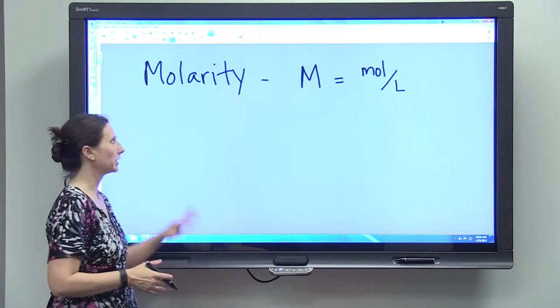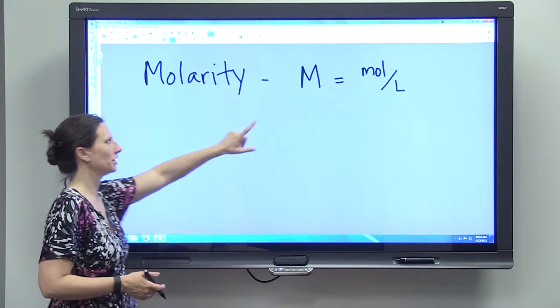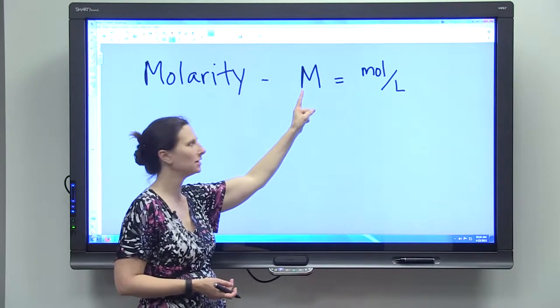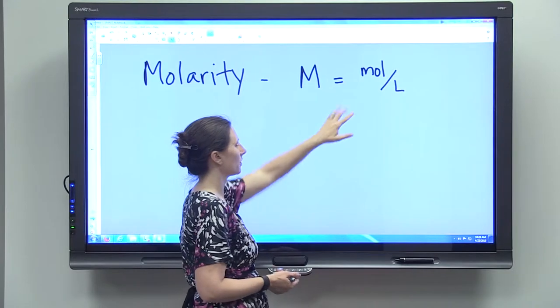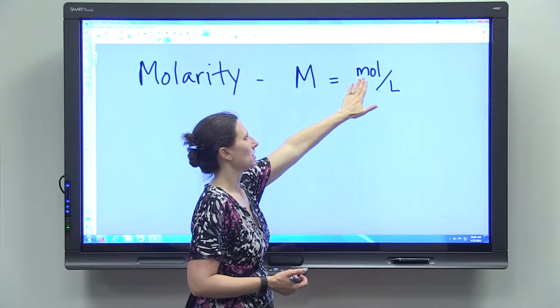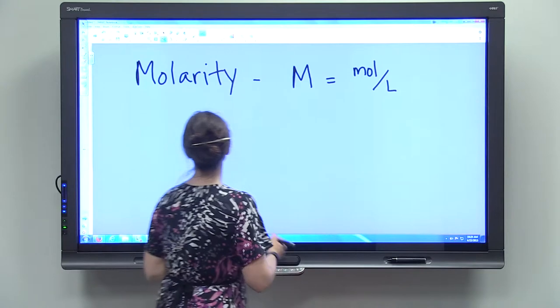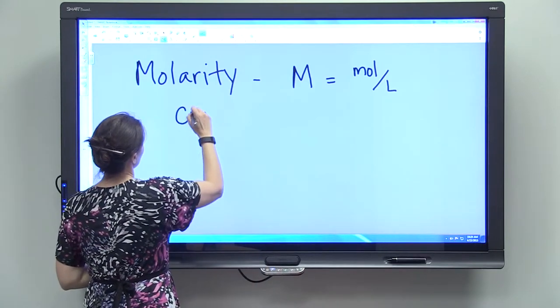So now we're going to talk a little bit about molarity. Molarity is abbreviated with a capital M, and it's a measure of concentration. It tells us the number of moles per liter of solution.